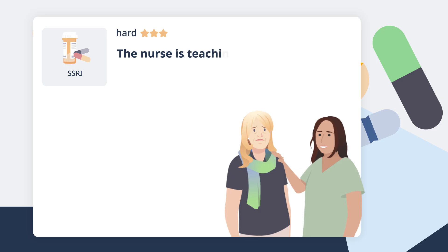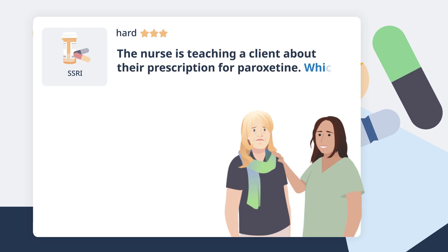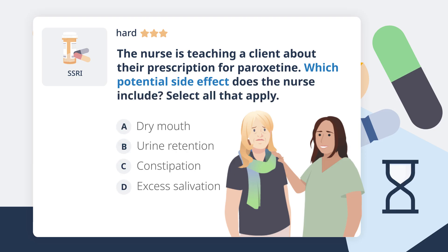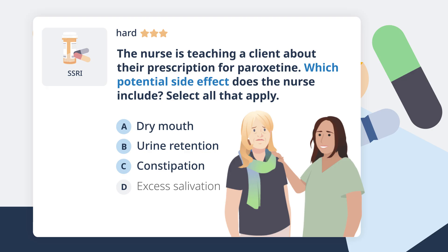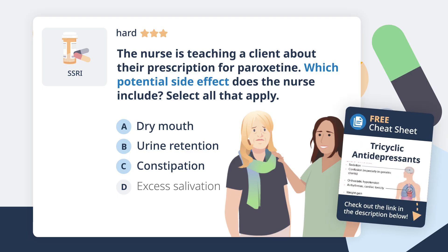The nurse is teaching a client about their prescription for paroxetine. Which potential side effects does the nurse include? Select all that apply. Clients taking selective serotonin reuptake inhibitors such as paroxetine may experience anticholinergic effects, which may include dry mouth, blurred vision, urine retention, constipation, and sexual dysfunction or decreased pleasure from sexual activities.